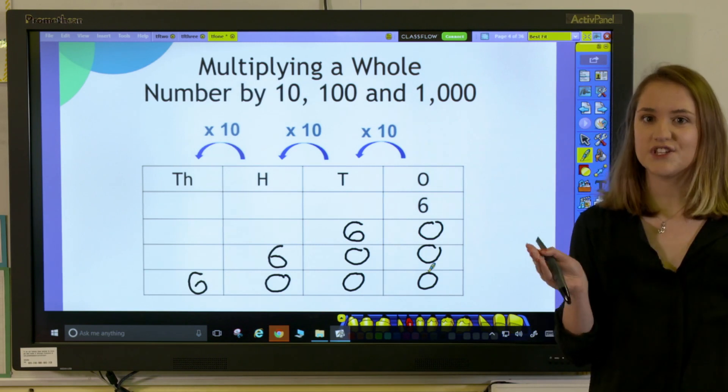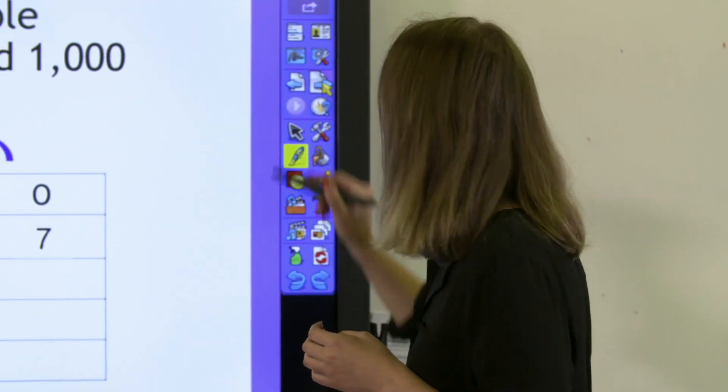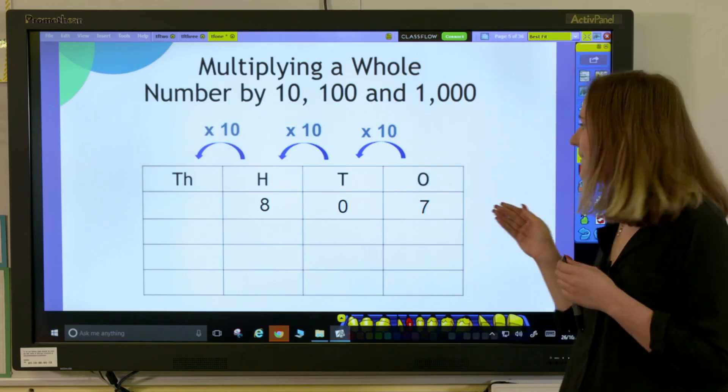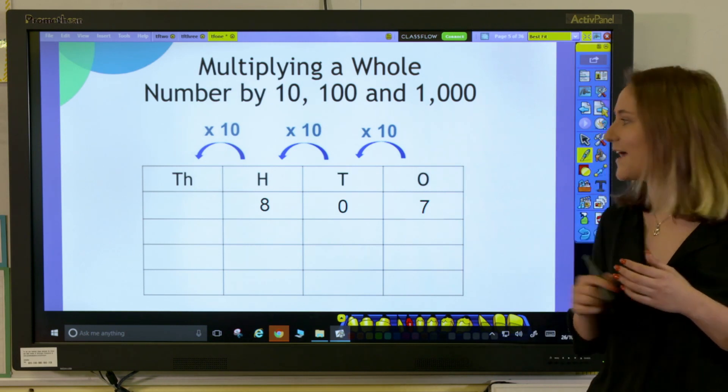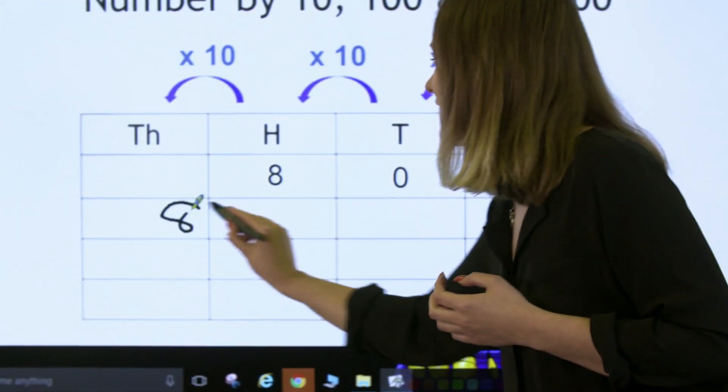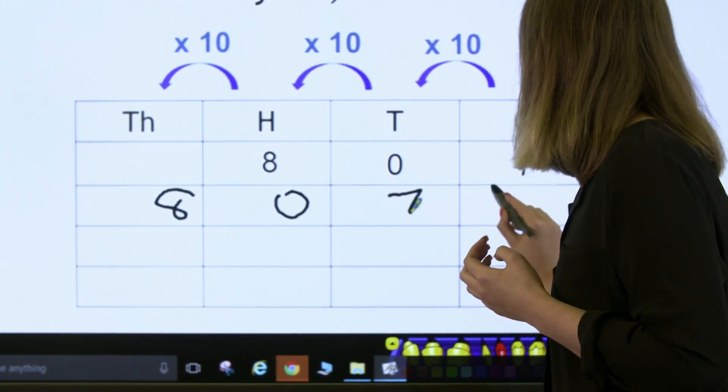We can use this method with larger numbers and decimals as well because our place value columns always have the same relationship. For example, if I was multiplying 807 by 10, all my digits would move one place to the left. So, it would become 8,070.